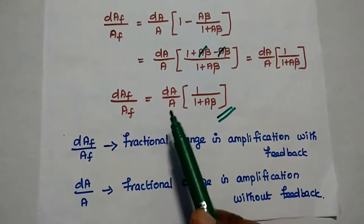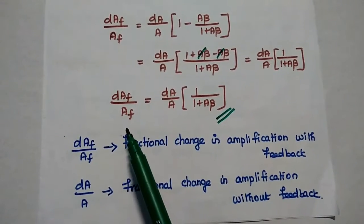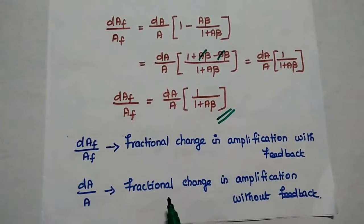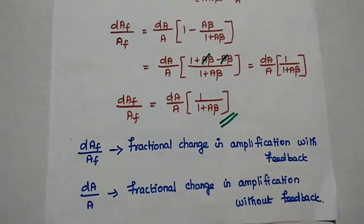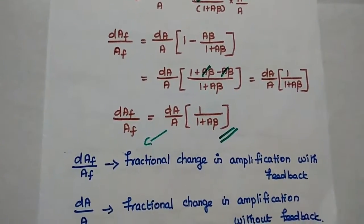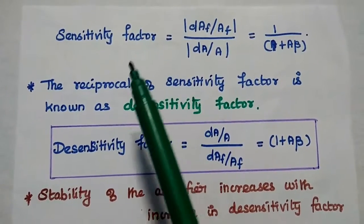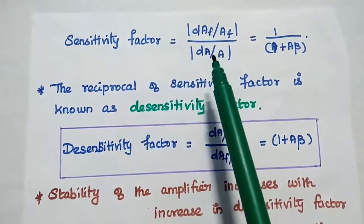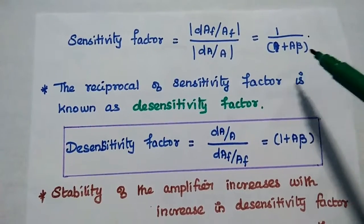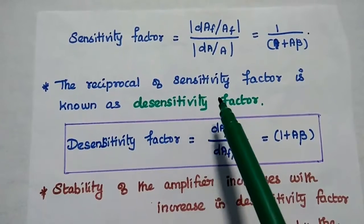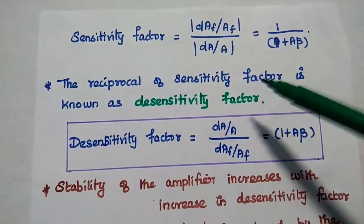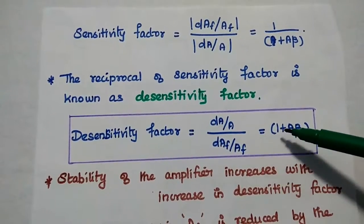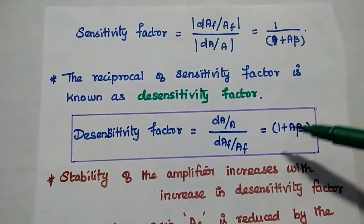The ratio of fractional change in amplification with feedback to without feedback is the sensitivity factor, equal to 1 divided by (1 plus A·beta). The reciprocal of the sensitivity factor is the desensitivity factor, which equals 1 plus A·beta. The stability of the amplifier increases with increase in the desensitivity factor.